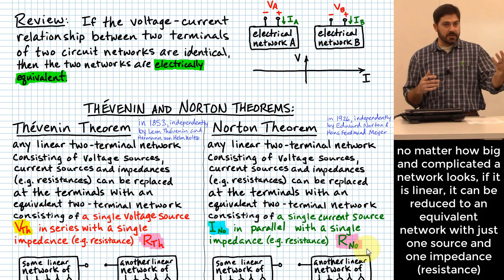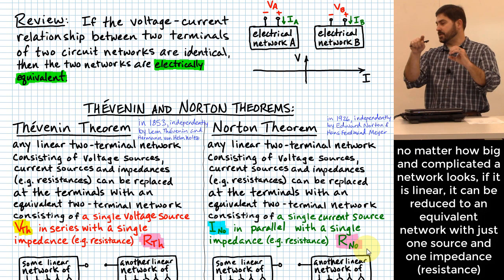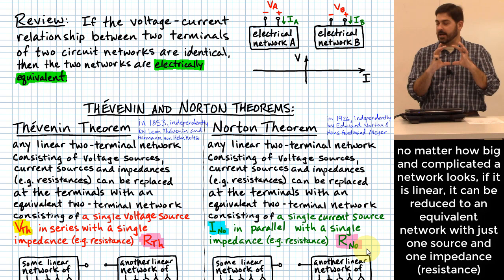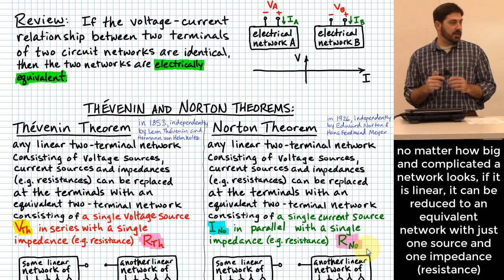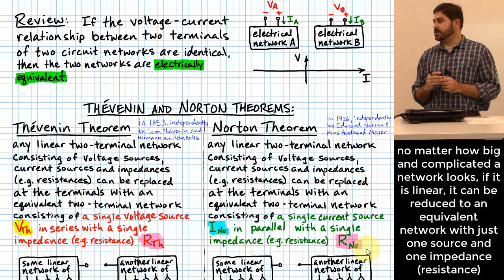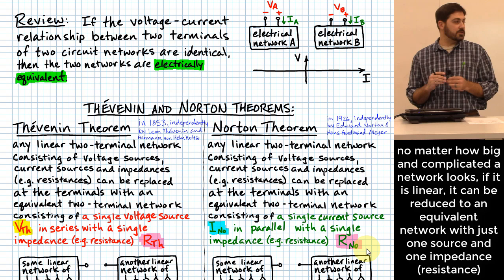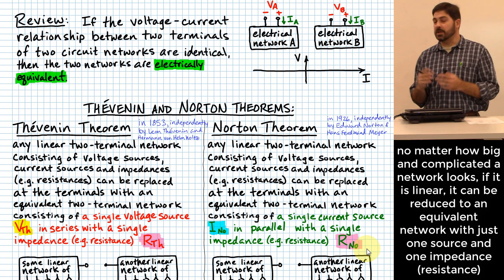There are two different ways to do that, hence the two different names. Thevenin is the technique of taking a voltage source and putting it in series with a resistance to make the equivalent circuit. The Norton equivalent circuit has a current source placed in parallel with the resistance. Regardless of how complicated a circuit gets, as long as it's linear, we can reduce it to one of these two circuits, and swapping between them is also fairly easy.